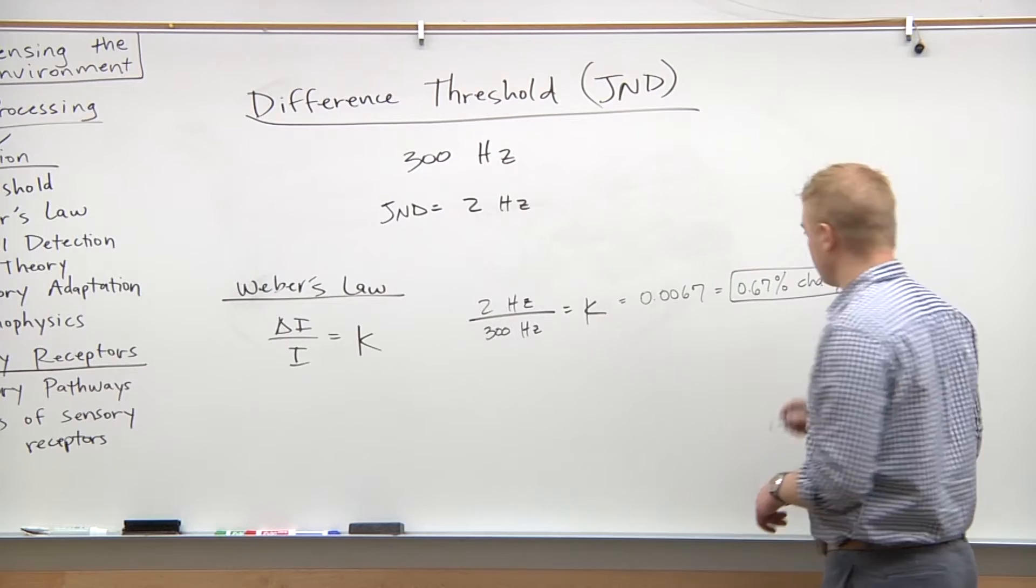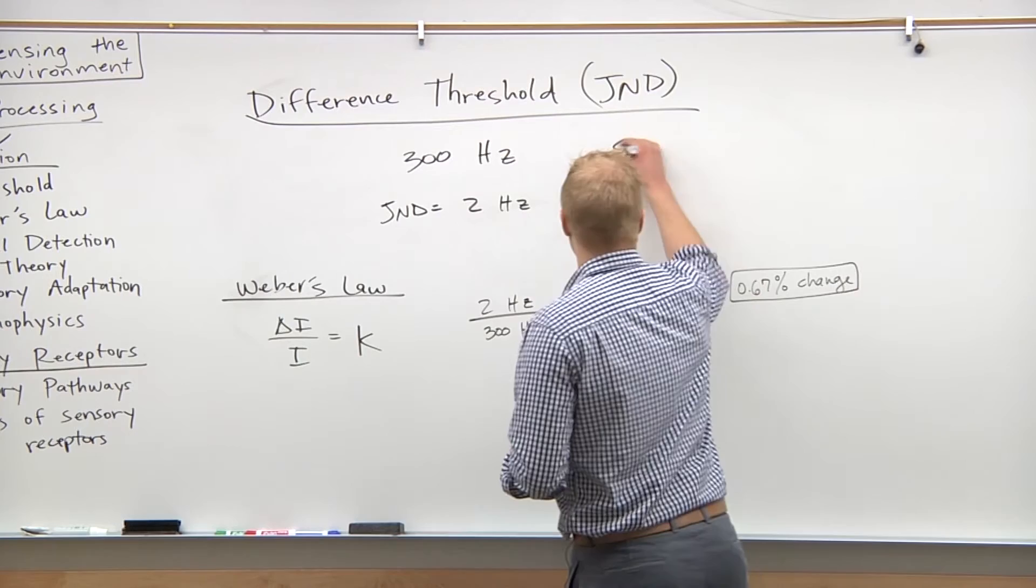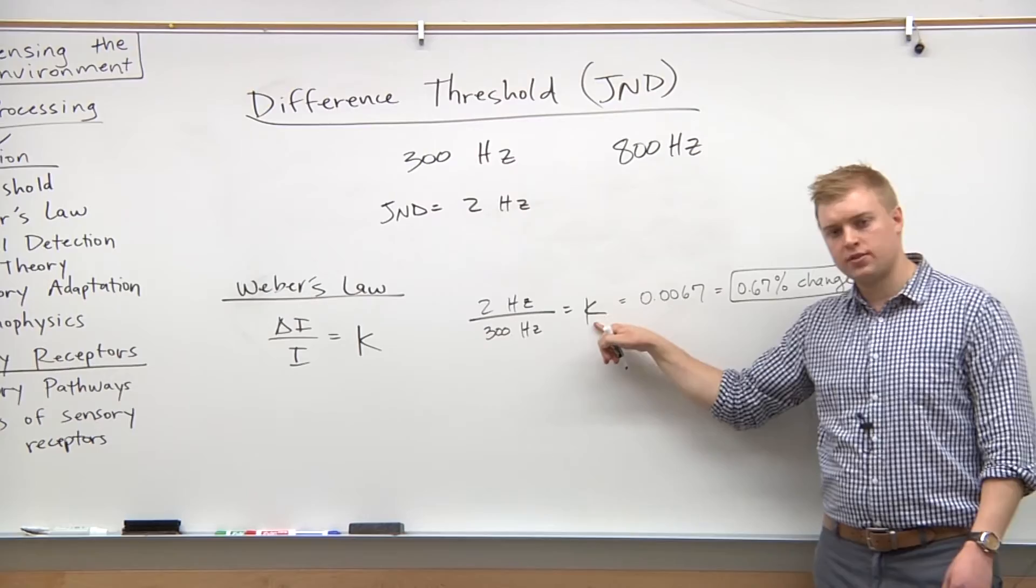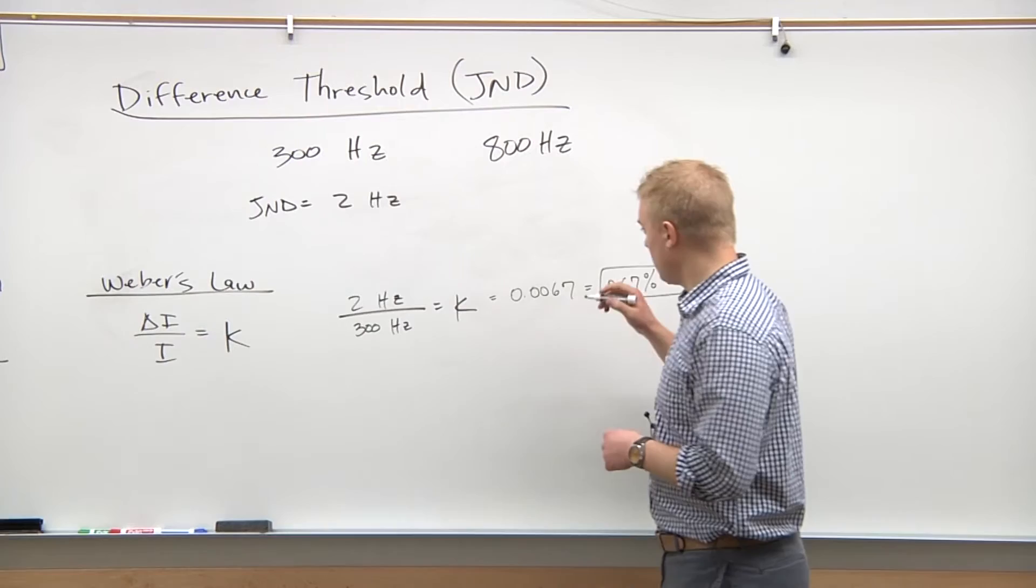This is the constant that we can then relate to any other sound. Now let's look at a sound that comes in at 800 hertz. Now that we know what the Weber's constant is, we can find what's the just noticeable difference - what other sound needs to come in at what intensity for us to detect that 50 percent of the time?